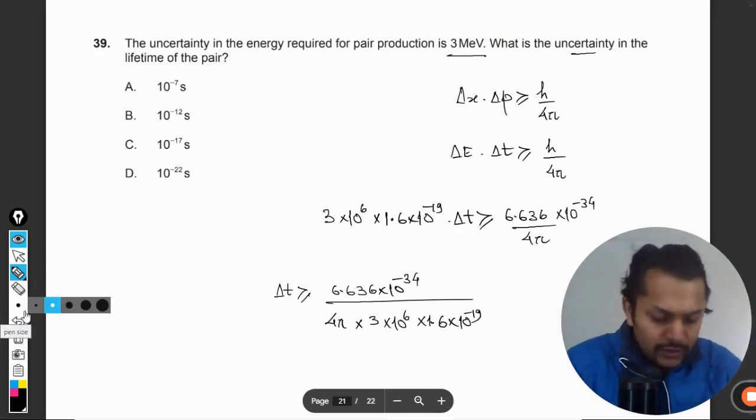Okay, so the value is 6.636 divided by 4 divided by π divided by 3 divided by 1.6. Yes, so I'm getting 0.11 × 10^-34 + 19 - 6, so that is 10^-21.